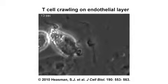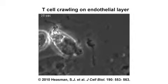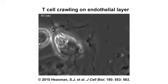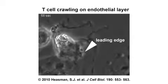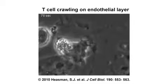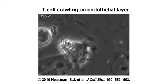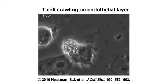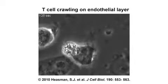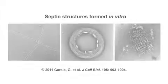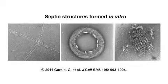T-lymphocytes move through tissues using an amoeboid-like mechanism that relies in part on the formation of membrane blebs at the cell's leading edge. In 2009, Max Crummel and colleagues at the University of California, San Francisco, found that this bleb-based motility is regulated by the septin family of GTP-binding proteins, which assemble into a variety of complex cytoskeletal structures.